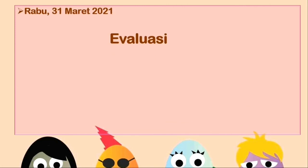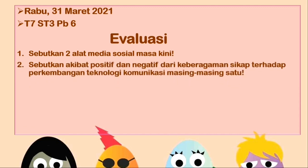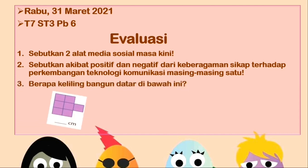Untuk menguji materi hari ini, disajikan evaluasi dari hari Rabu 31 Maret 2021. Tulis Tema 7 ST3 PB6. Nomor 1, sebutkan dua alat media sosial masa kini — tadi ada tiga, kali ini sebutkan dua saja. Yang kedua, sebutkan akibat positif dan negatif dari keberagaman sikap terhadap perkembangan teknologi komunikasi, masing-masing satu — yang positif satu, yang negatif satu. Nomor tiga, berapa keliling dari gambar ini? Dihitung setiap kontak sisinya ya, nanti ketemu. Kerjakan sendiri evaluasinya biar lebih pintar ya. Kalau sudah dijawab, baru dicek oleh Bapak Ibu, atau boleh tanya juga tidak apa.